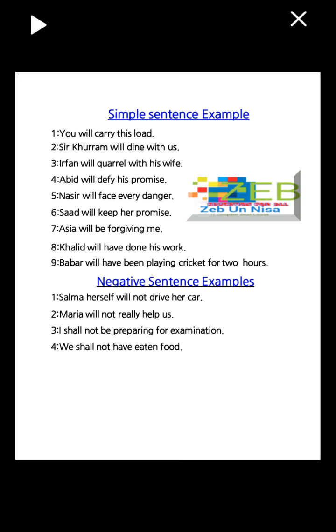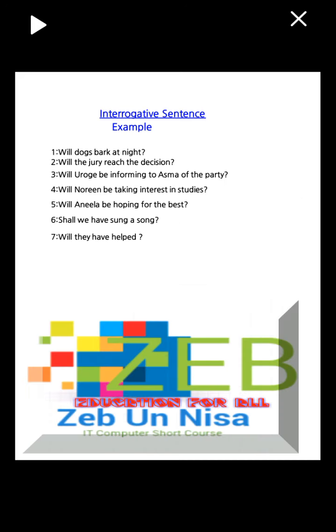Negative sentence examples: number one, Salma herself will not drive her car. Number two, Maria will not really help us. Number three, I shall not be preparing for the examination. Number four, we shall not have eaten food.